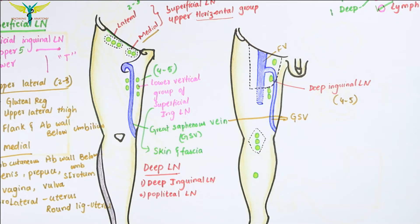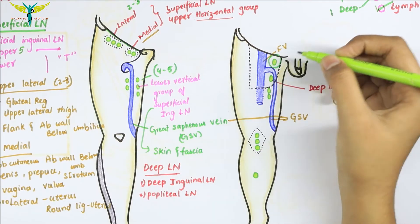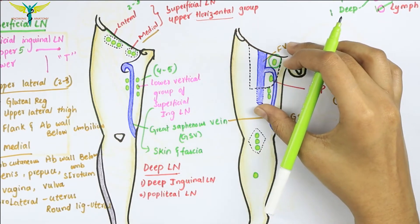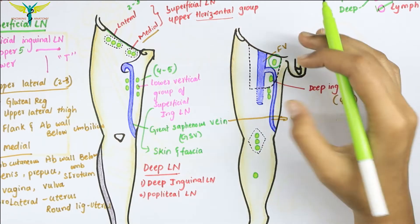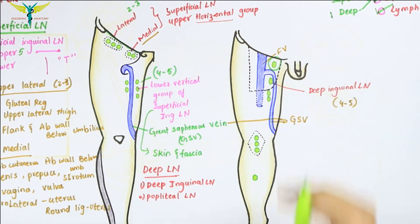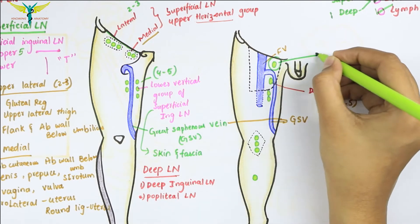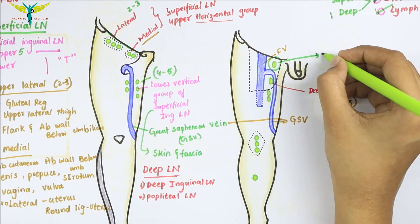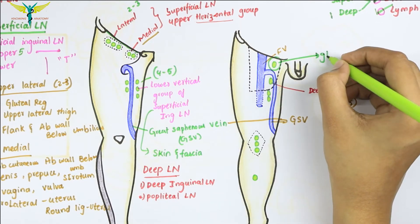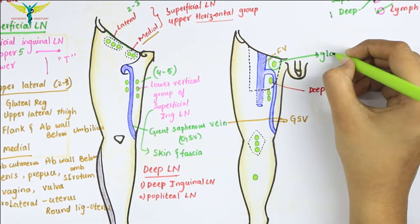Remember this point: this lymph node which lies more proximal lies in the femoral canal. For a diagram of the femoral canal, you can click on the 'i' button. And this node is called the gland of Cloquet or the gland of Rosenmuller.